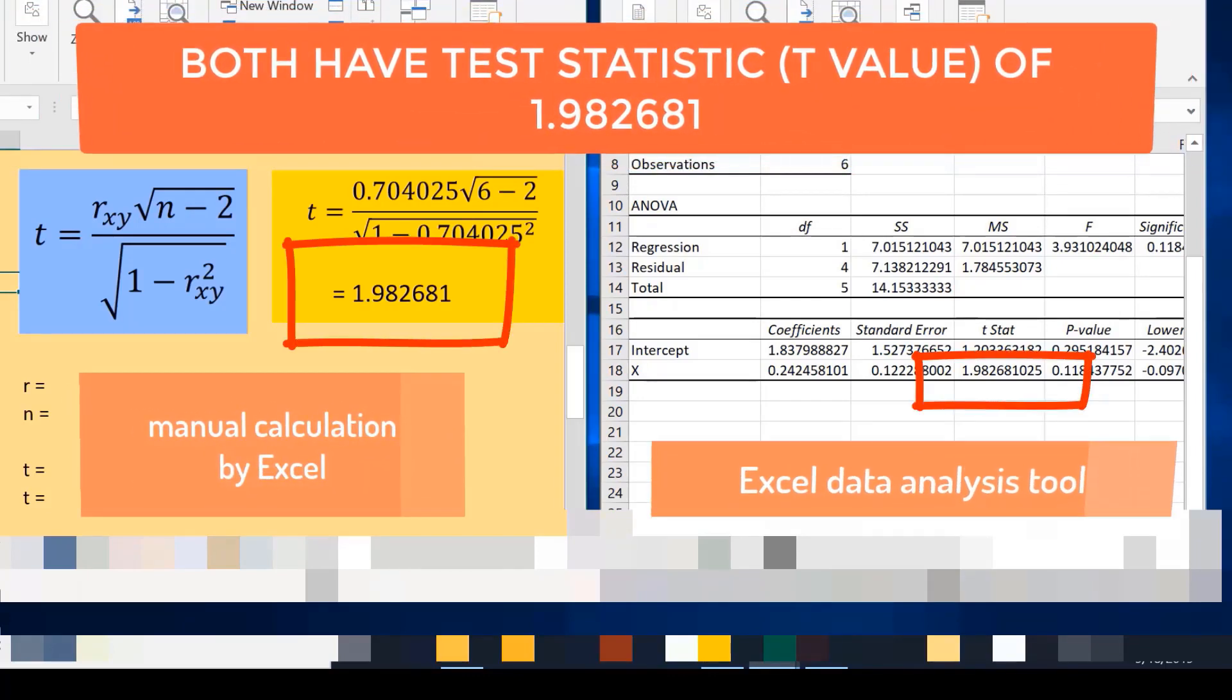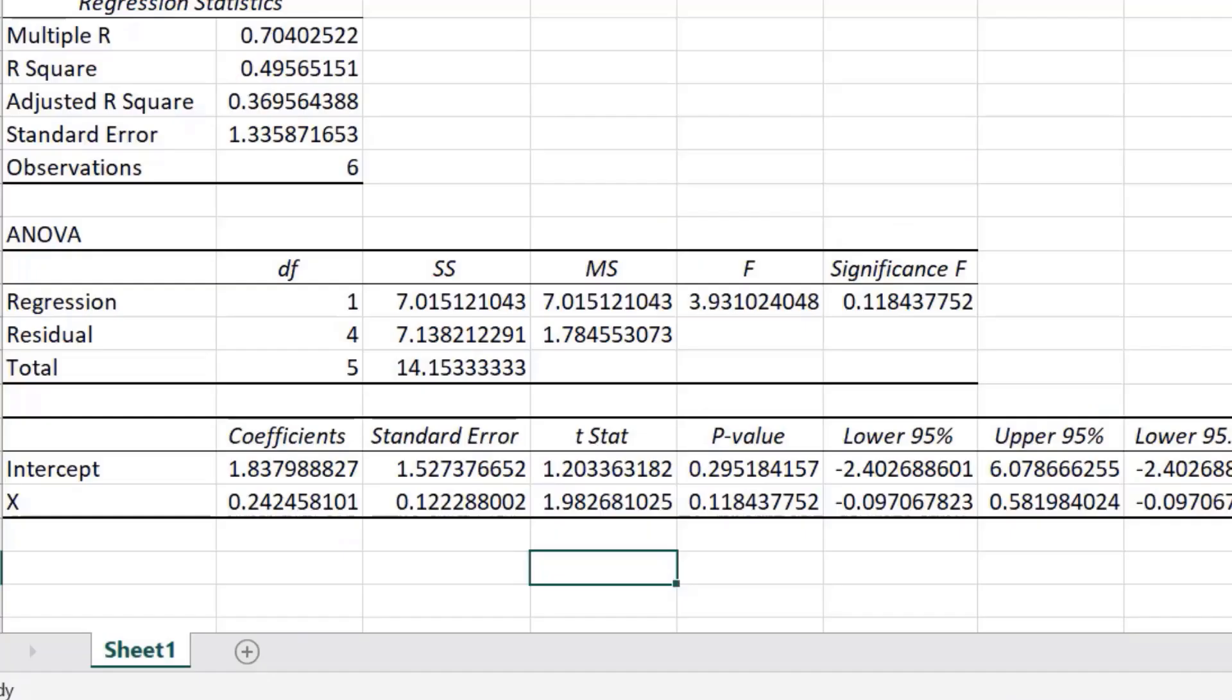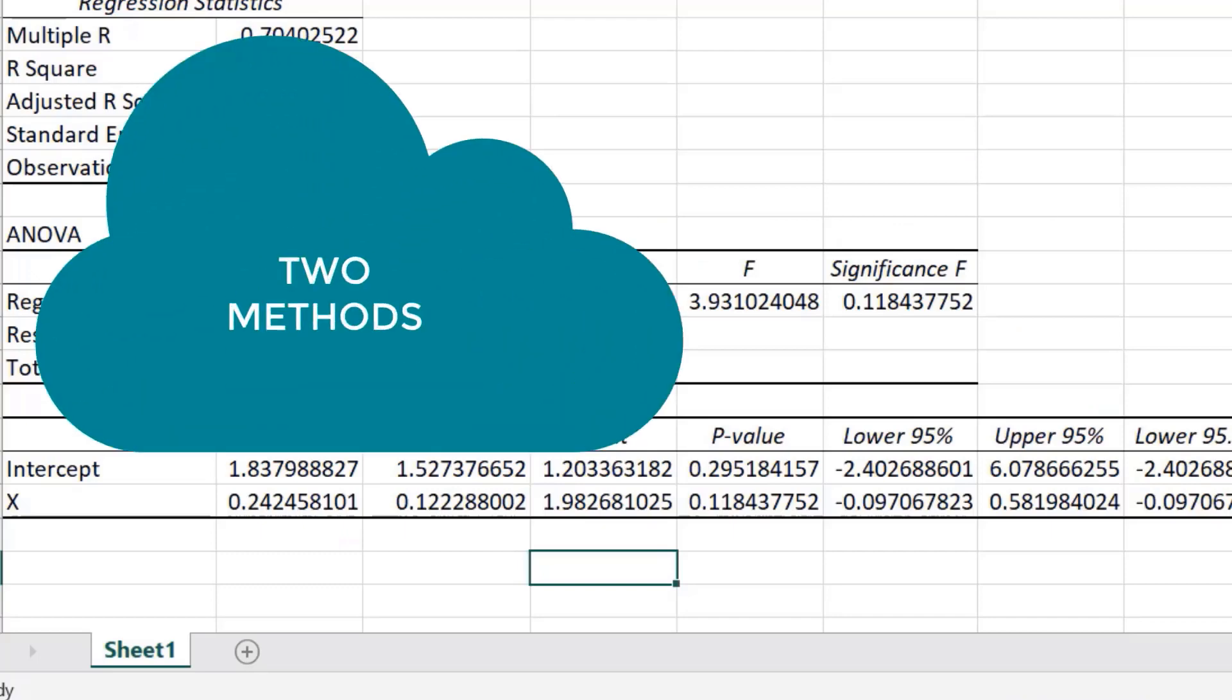The manual Excel calculation and data analysis also show the same test statistic or t-value of 1.98268. The third part of this video is presenting the two methods for making conclusions.